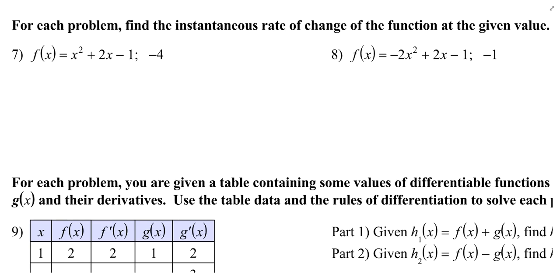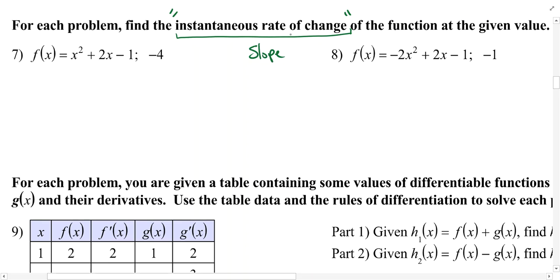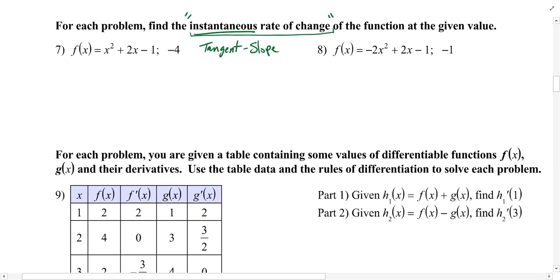You should be able to do that for number 6 as well as other more complicated equations. I tossed in questions like 7 and 8 just as a reminder of the phrase instantaneous rate of change — we haven't seen that in a little while. Rate of change just means slope. Now that we're talking about an instantaneous rate of change rather than an average rate of change, the instantaneous part just reminds us we're talking about the slope of a tangent line. Find the derivative and use it to find the slope when x equals negative 4, and when x equals negative 1.